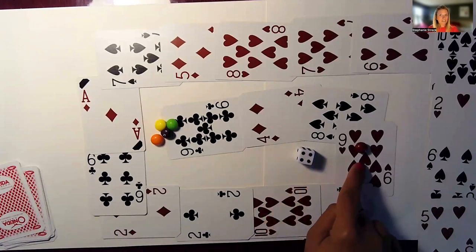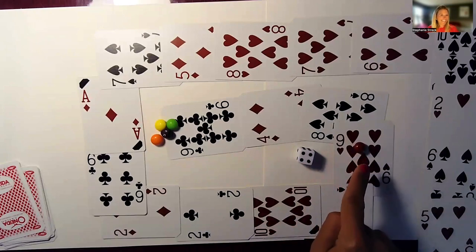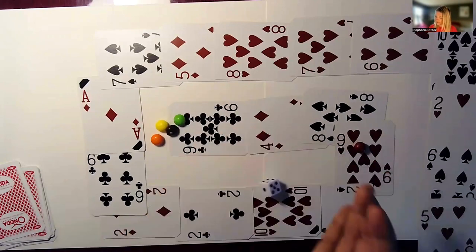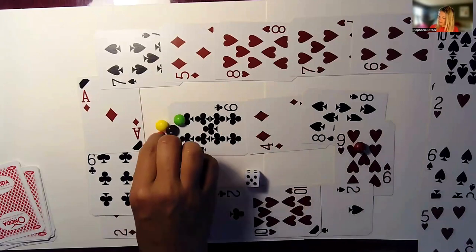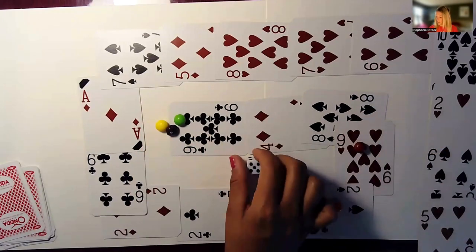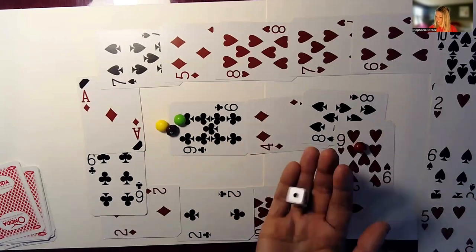If you get thirteen correct, you leave your counter or your skittle on this spot, and then it's the next person's turn. So orange will go next. Orange got a five: one, two, three, four, five. Orange will say, I know this is five, and two more is seven. Seven is correct, so orange stays.